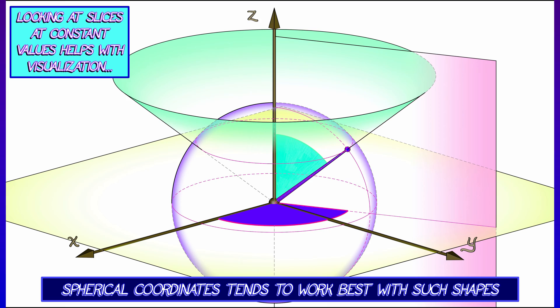So, for example, if we look at the set of all points that have a fixed rho value, then what is that going to be? That's going to be a sphere of radius rho about the origin.